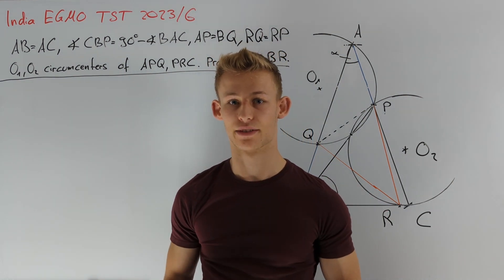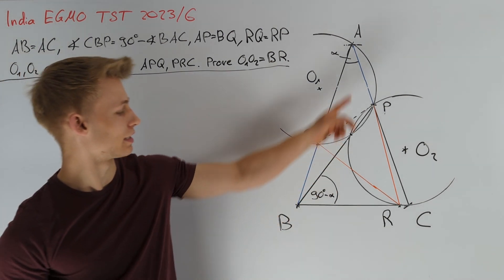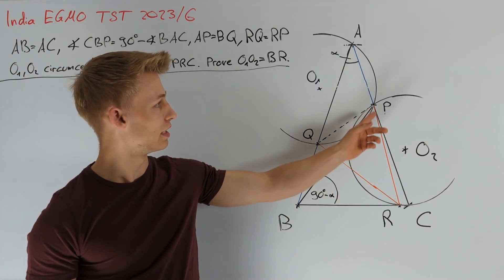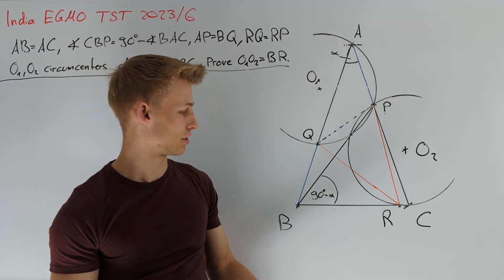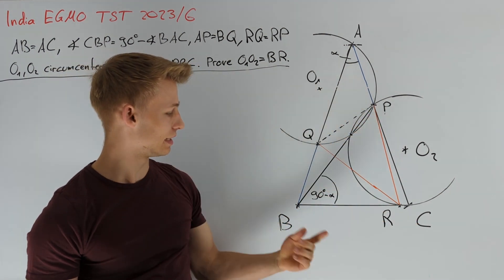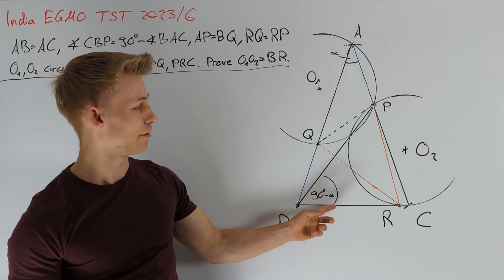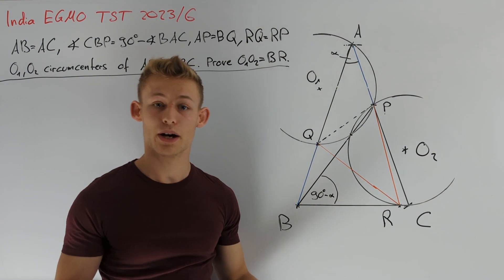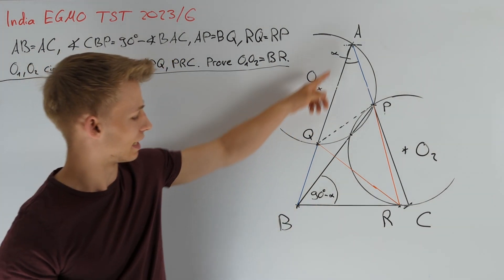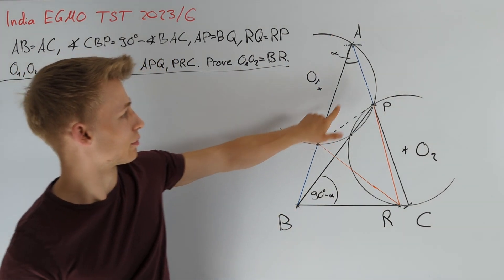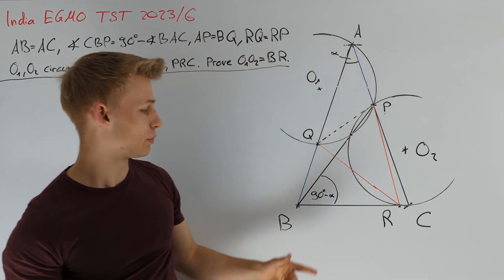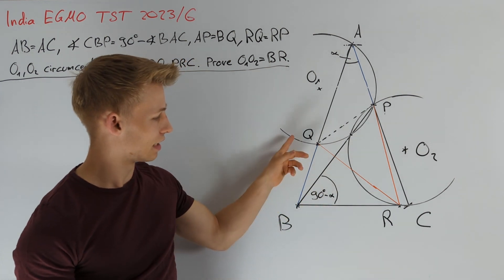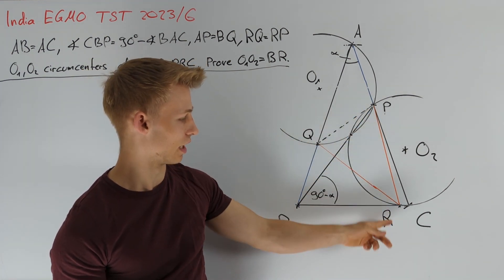Let's have a look at the picture. We have a given isosceles triangle A, B and C. We choose a point P on side AC such that angle CBP is equal to 90 degrees minus alpha, where alpha equals angle BAC. We choose point Q on side AB such that BQ equals AP, and point R on side BC such that QR equals PR.